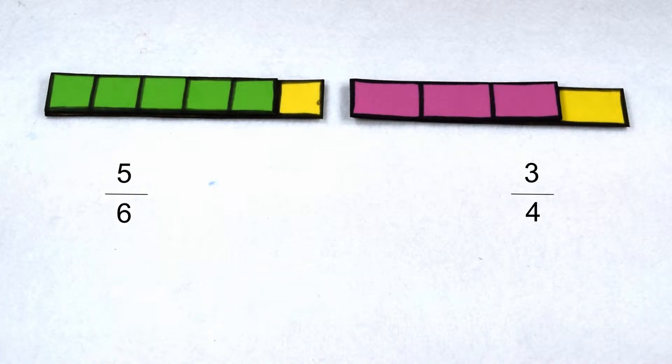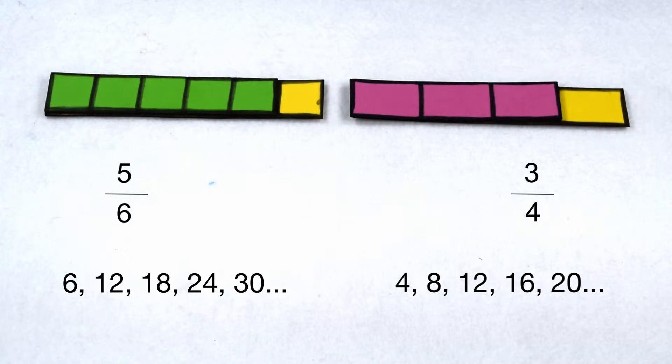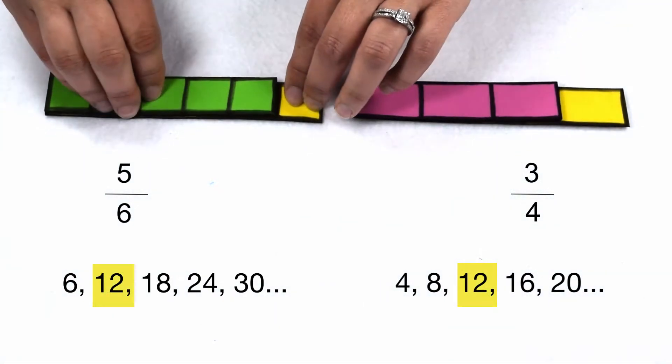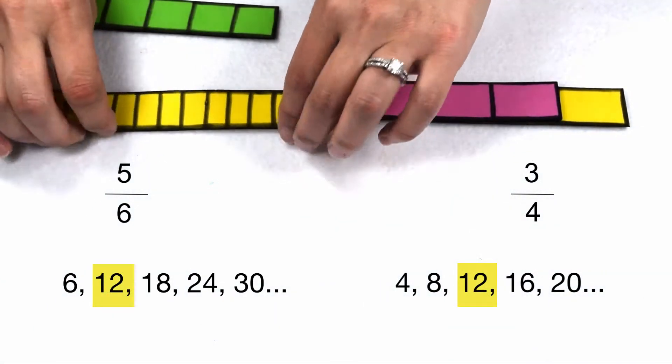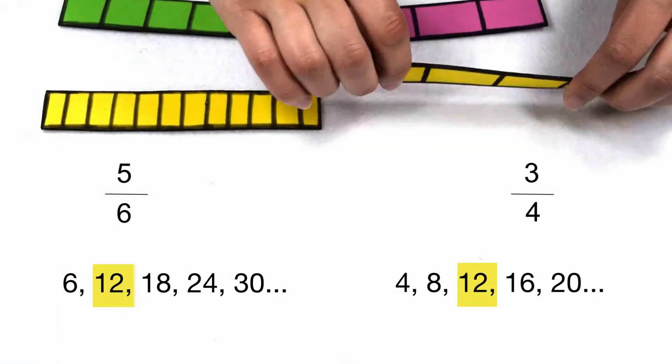We need to find the least common multiple of 6 and 4. Multiples of 6 include 6, 12, 18, 24, and 30. Multiples of 4 include 4, 8, 12, 16, and 20. 12 is our first least common multiple on that list, so we're going to change both fractions to have a common denominator of 12.